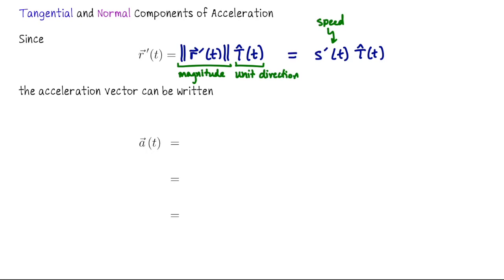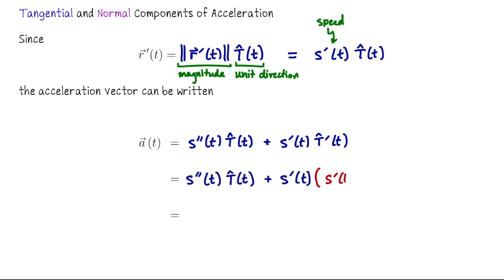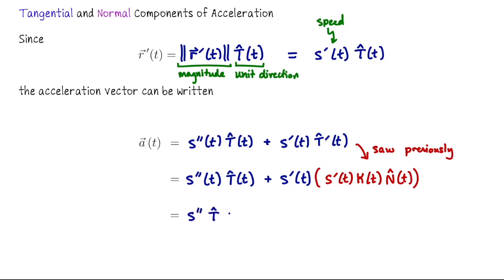The acceleration vector r″ is the derivative of s′·T̂. By the product rule, that's s″·T̂ plus s′·T̂′. Previously we saw that T̂′ = s′·κ·N̂, so substituting and multiplying s′ × s′ gives us: r″ = s″·T̂ + (s′)²·κ·N̂, where all quantities are functions of t.